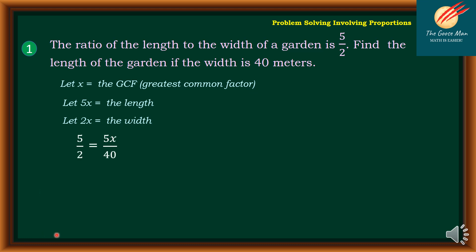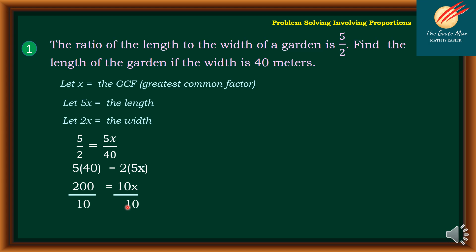So next, we have 5 over 2, which is the ratio equal to 5 representing the length. So we have 5x all over 2 for the width, and this is equal to 40. Using the cross products, 5 times 40 is the same as 2 times 5x. So 5 times 40 equals 200, which is equal to 10x. Divide both sides of the equation by 10. So the value of x is equal to 20.